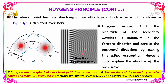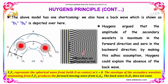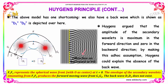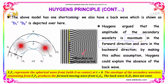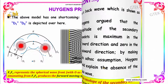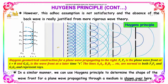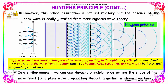The model has one shortcoming: it also produces a back wave shown as D1 and D2. Huygens argued that the amplitude of the secondary wavelet is maximum in the forward direction and zero in the backward direction. By making this ad hoc assumption, Huygens could explain the absence of the back wave. However, this ad hoc assumption is not fully satisfactory, and the absence of the back wave is really justified from more rigorous wave theory.